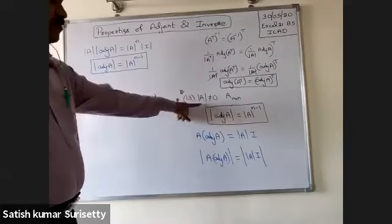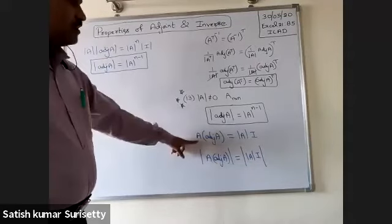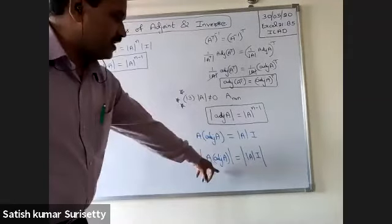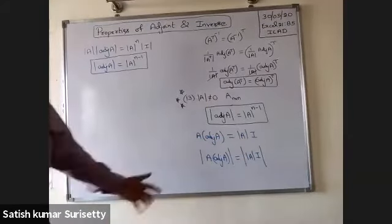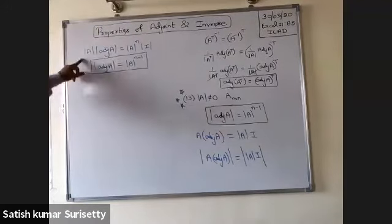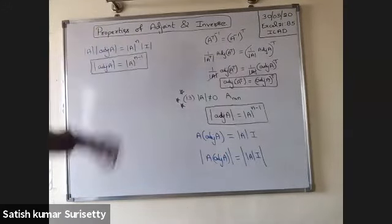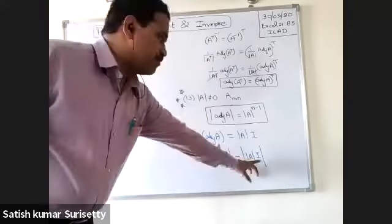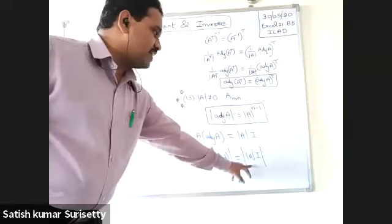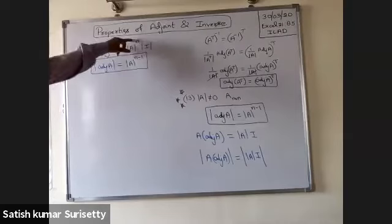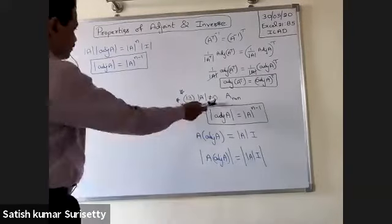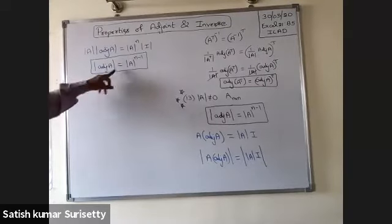Since A is non-singular, determinant of A is not equal to zero. Using A into adjoint of A equals determinant of A into I, take determinant on both sides. Determinant of A times determinant of adjoint of A equals determinant of A to the power of n times determinant of I, and determinant of I is 1. Dividing by determinant of A, we get determinant of adjoint of A equals determinant of A to the power of n minus 1.